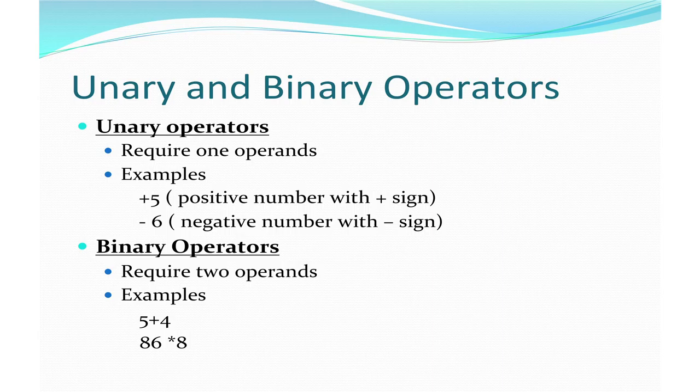Depending on the number of operands required by the operator, the classification of operators is into unary and binary. A unary operator requires one operand. The best example is a positive number like plus five and a negative number like minus six. By default all numbers are considered positive, but if I want to show a negative number then a minus sign has to be given. So minus here is a unary operator which requires just one operand to signify its sign.